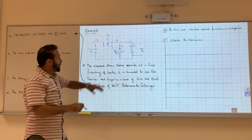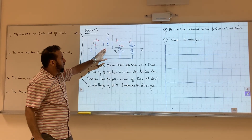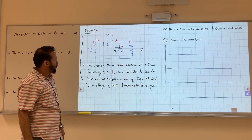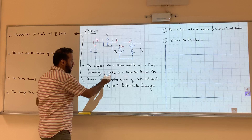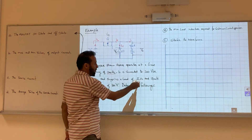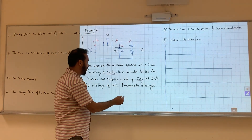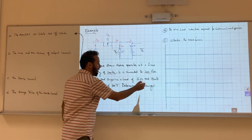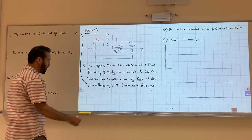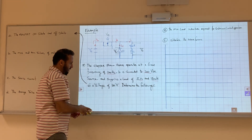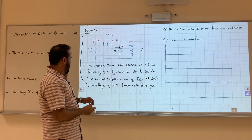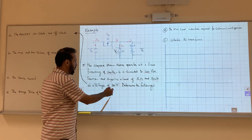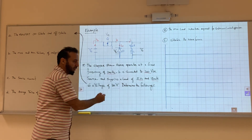So we have a buck converter right here. We have the frequency, the resistance, the inductance, and those values. We have the voltage of the source, the supply load, and we have V-out.